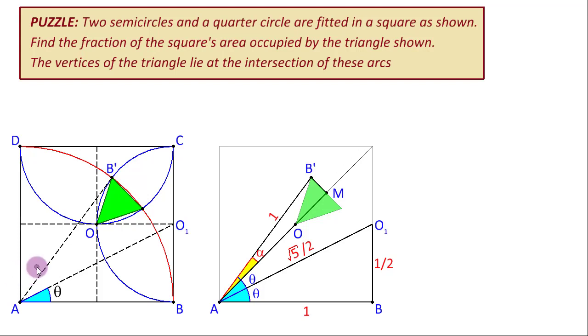And that angle is going to be very helpful because what we need here the half base B dash M and this height are related to this angle. B dash M is the opposite side and its adjacent side is this whole angle A M from which if we subtract this half diagonal we will get the height of our desired triangle. So, let's do that calculation over here.